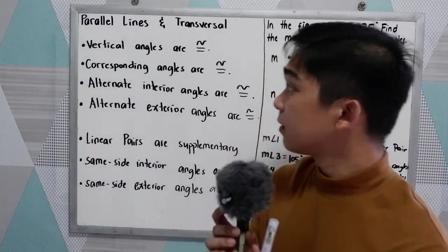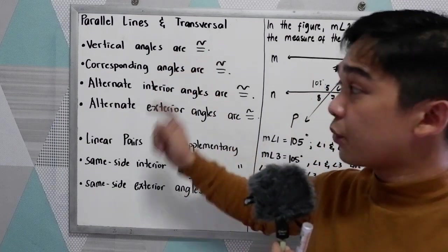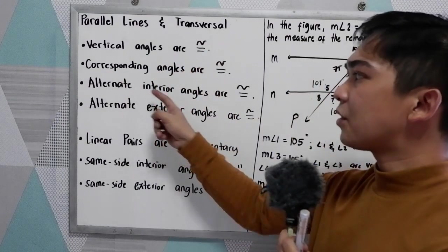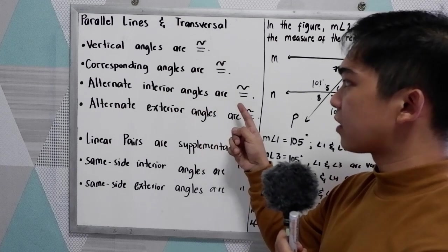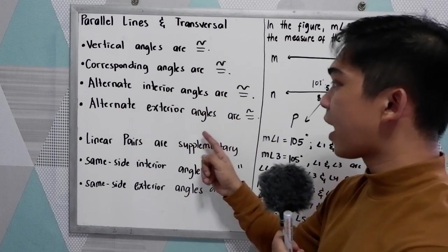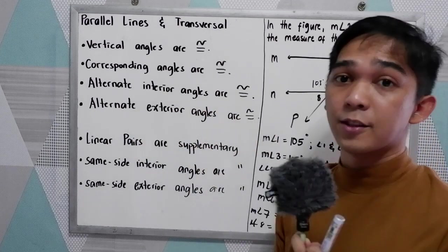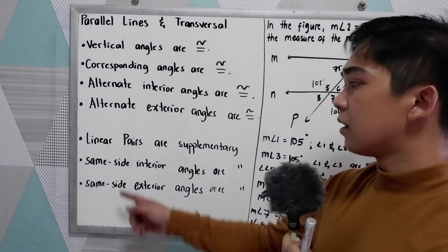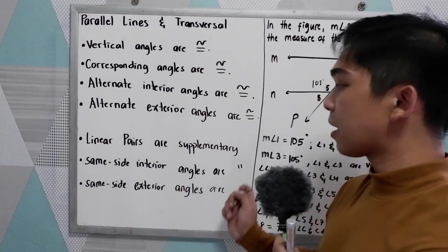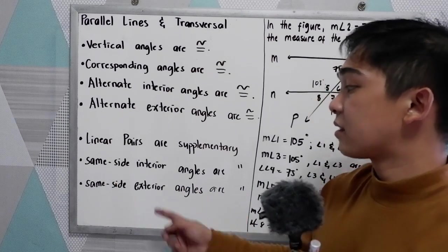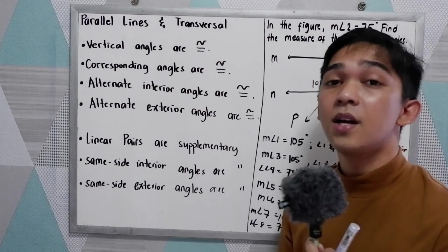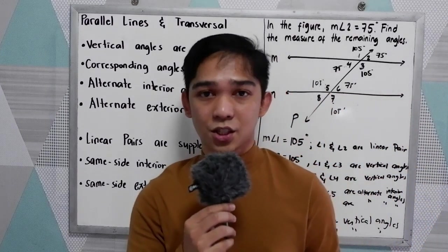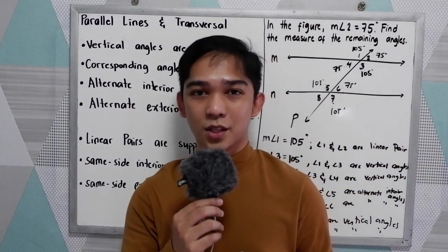Again: vertical angles are congruent, corresponding angles are congruent, alternate interior angles are congruent, alternate exterior angles are congruent, linear pairs are supplementary, same side interior angles are supplementary, and same side exterior angles are supplementary. Thank you for watching Senior Pablo TV.